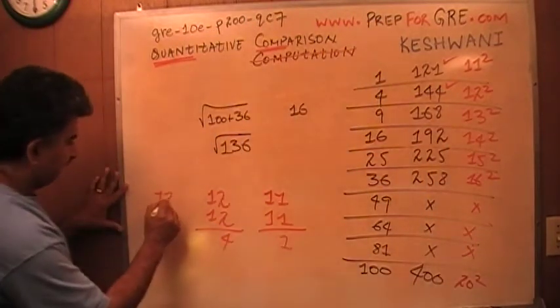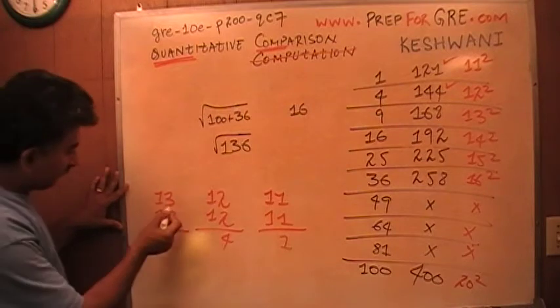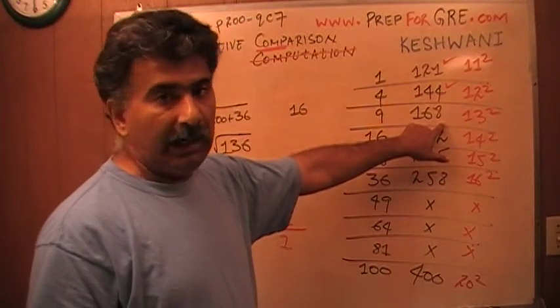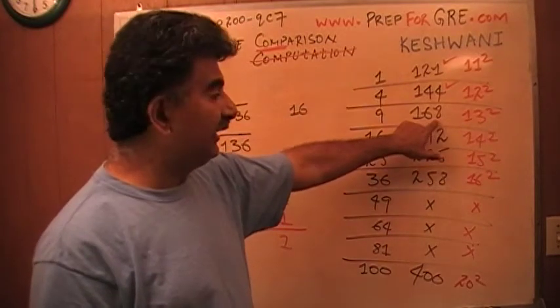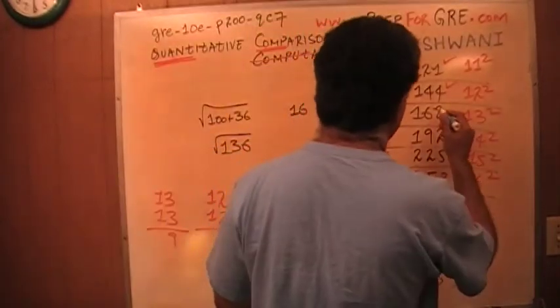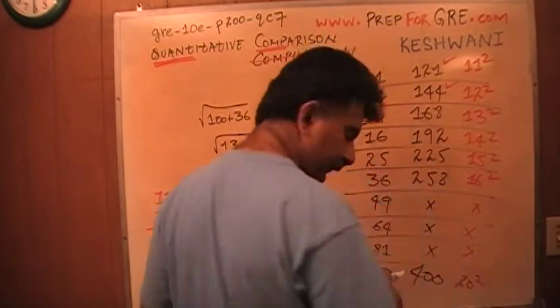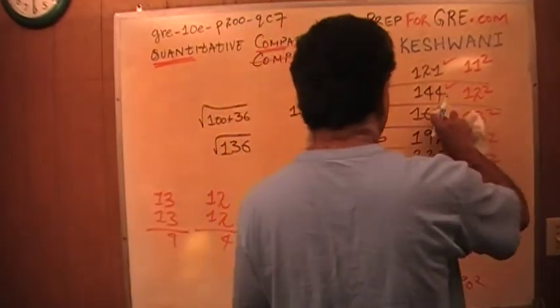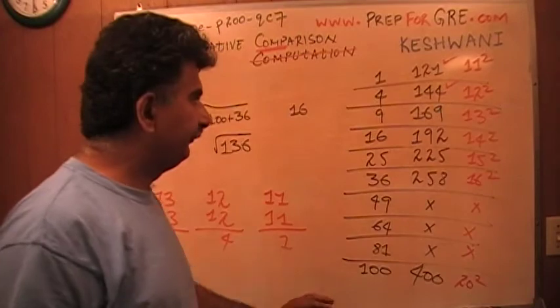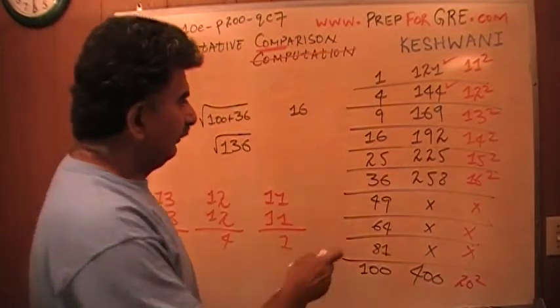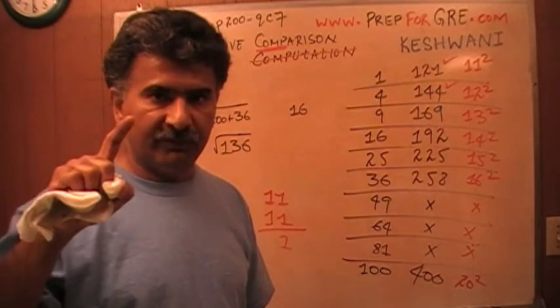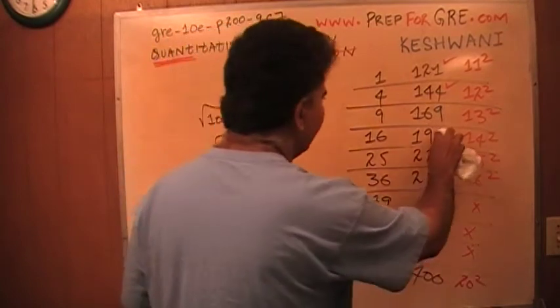What about this guy? Square of 13, the unit digit should be 3 times 3, it should end in a 9. It cannot end in an 8. I don't know what the right answer is, I don't know what square of 13 is, but that is not right. It needs to be fixed. It is 169. What else is wrong here? Can you spot? You see? Square of 16, unit digits should be 6 times 6. 6 times 6 is 36, it should end in a 6. This is not right.